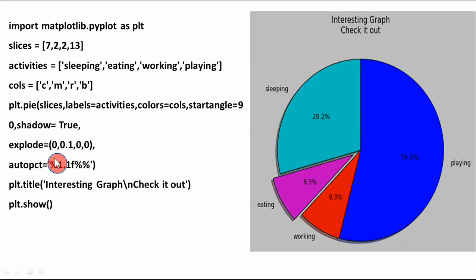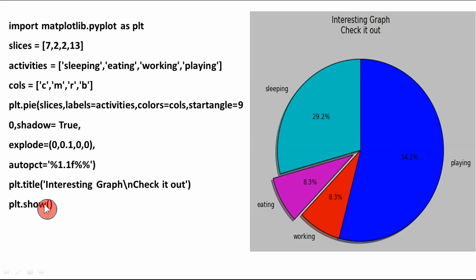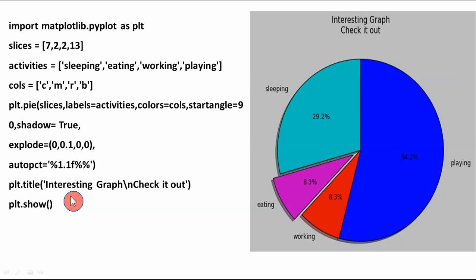We can also give a title to the whole pie chart using plt.title, for example 'Pie Chart - Interesting Graph, Check it Out!' with a newline. Finally we invoke the show function, which is very important — until you call show, the pie chart will not be displayed. In this way you can draw and display your pie chart.